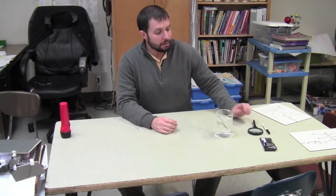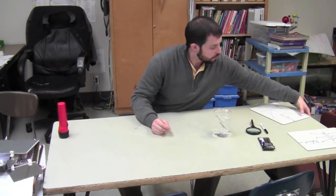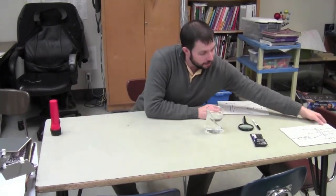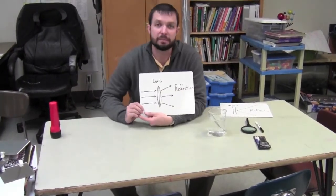So in summary, two things about light that you guys need to understand is reflection and refraction. Reflection, remember, is the bouncing of light and refraction is the bending of light.